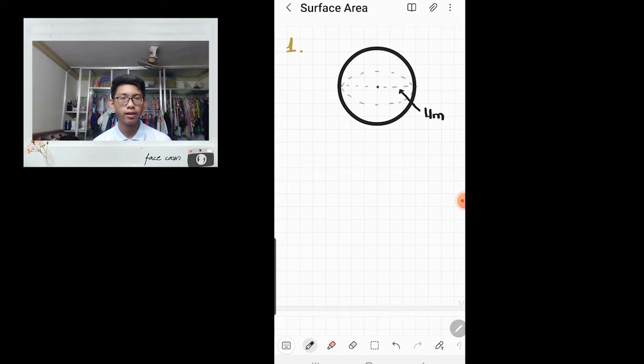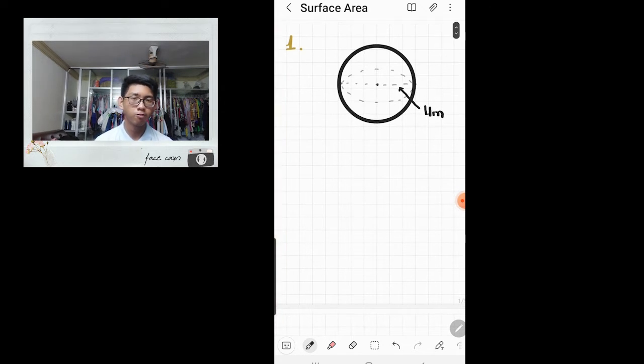As you know, the formula for the surface area of a sphere is 4πr² when they gave us the radius. But now they gave us the diameter, so it will become 4π d² over 4.